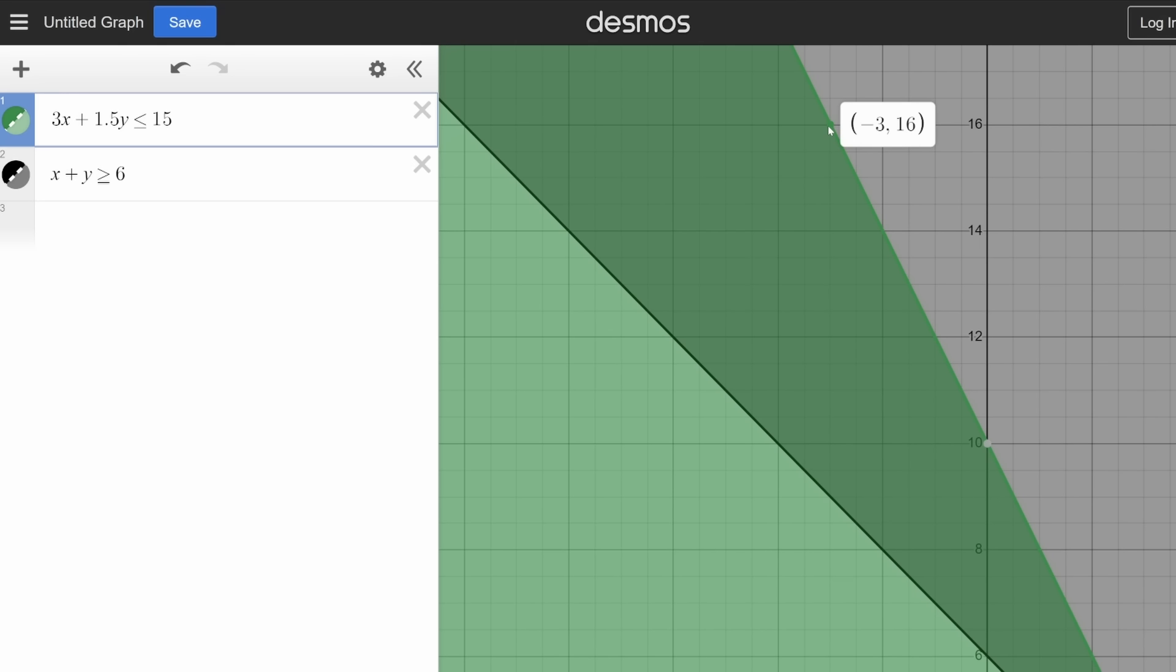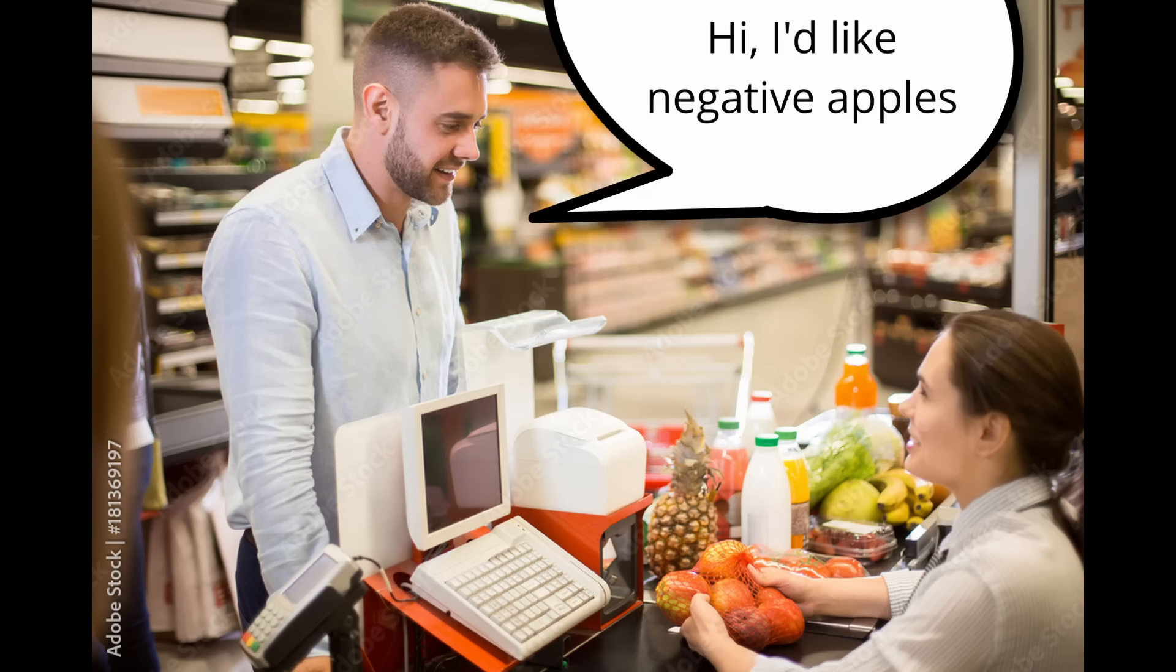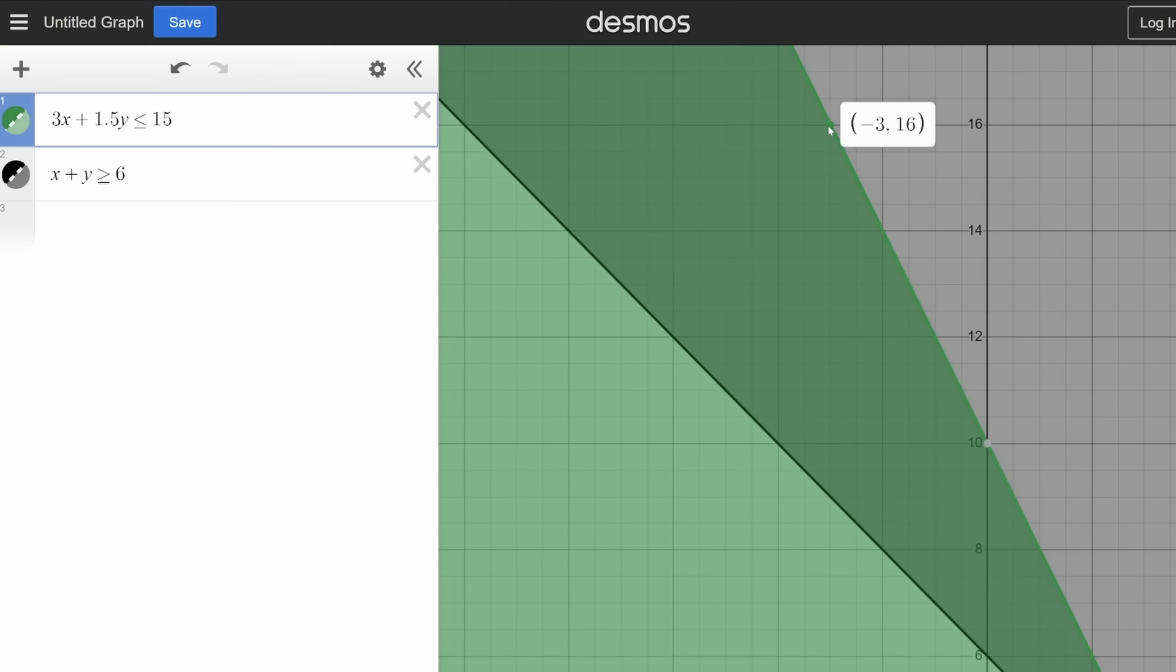You can't do that. You can't just walk into the store and be like, I'll take negative three apples, please, to finance the rest of your purchase. So just because the graph seems to indicate something doesn't mean that you can ignore the context of the original problem.